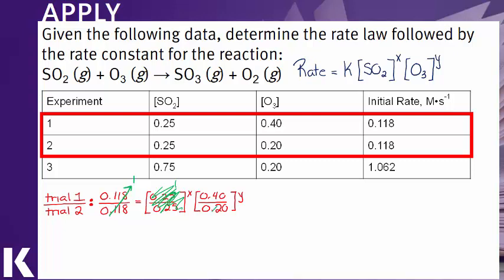And then we have 0.4 over 0.2. That will give us two. So this will simplify to one equals two to the y. Remember any number to the zero power is one. So here y equals zero. And we can plug that into our rate law equation saying that the rate will be completely independent of the concentration of ozone.